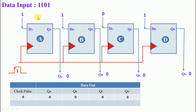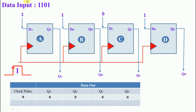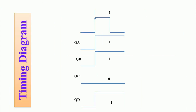Now we are going to consider a data input of 1101. This 1101 is loaded into each flip-flop at the same time, while the output is initially 0000. When we apply the first clock pulse, the input data is shifted from input to output. After the clock pulse, the output becomes 1101. This is the operation of the parallel in parallel out shift register.